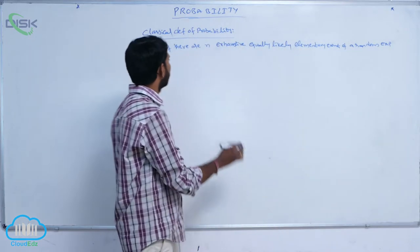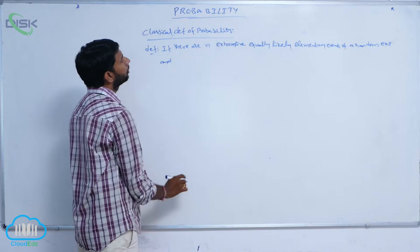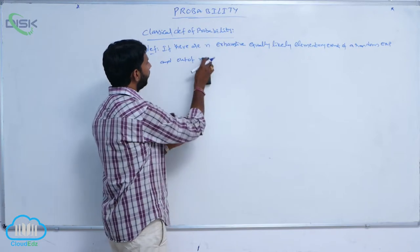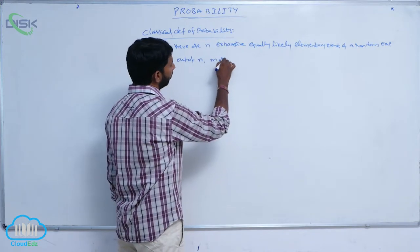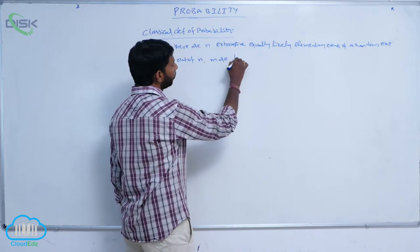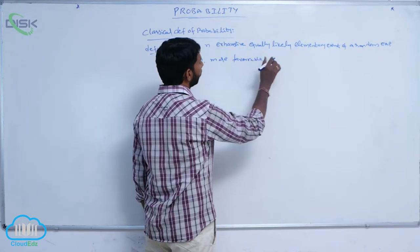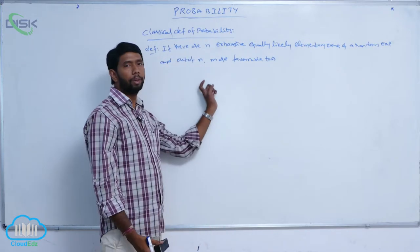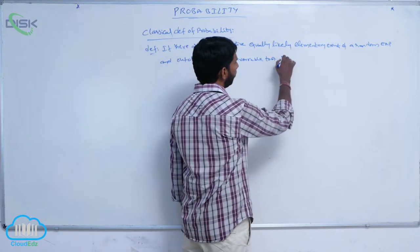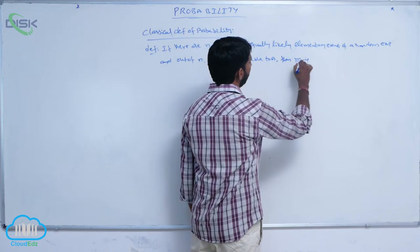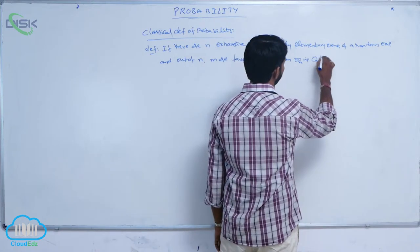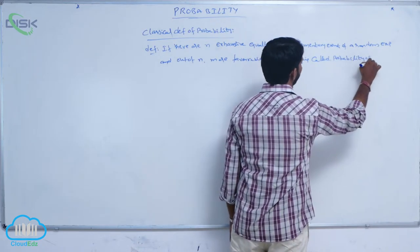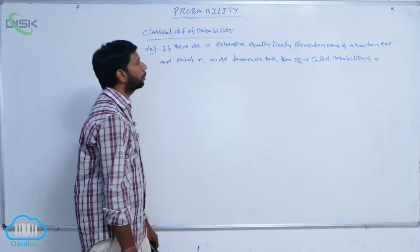and out of N, M are favorable to capital A, then M by N is called probability of A,